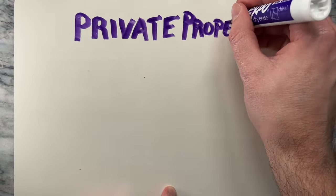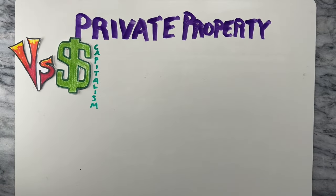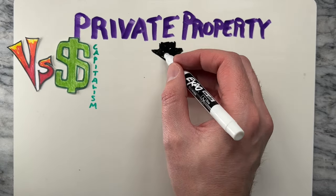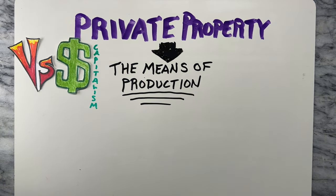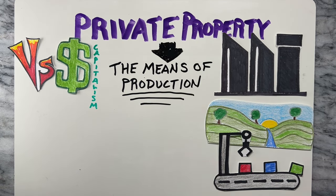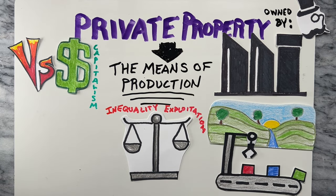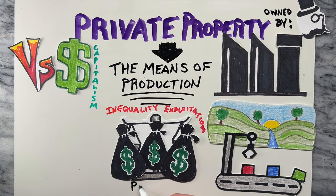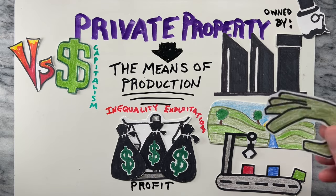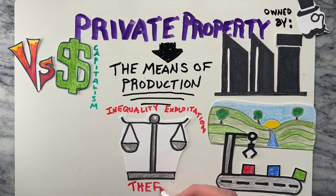Private property is a fundamental concept within the communist ideology and it is one of the main issues that distinguishes communism from other economic systems. In communism, private property refers to the means of production such as factories, land, and machinery, which are typically owned and controlled by individuals or corporations. Communists believe that private property leads to economic inequality and exploitation, as the owners of these means of production can use them to extract profit from the labor of others. They argue that private property is a form of theft, as it allows individuals to take the fruit of others' labor without contributing anything themselves.